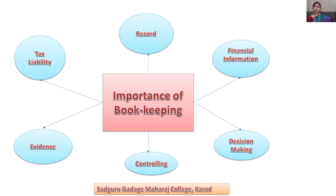The second point is financial information: bookkeeping is useful to get information related to profit, loss, assets, liabilities, etc., at any given time. The third point is decision making: bookkeeping provides financial information to the businessman for decision making. Bookkeeping also enables the executives of the business to control the activities of business.